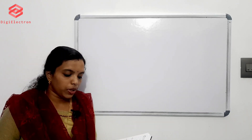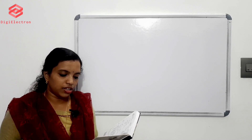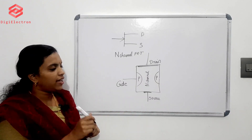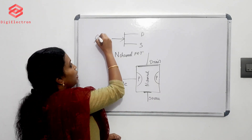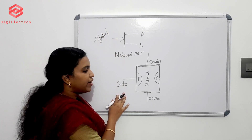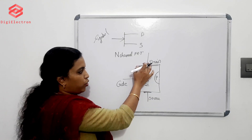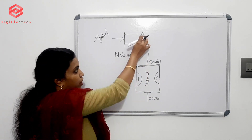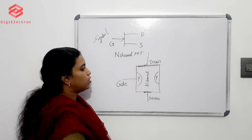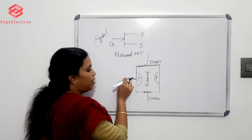The second question is: draw the symbol of N-channel FET. If we use N-channel JFET, the symbol will be as shown. This is the symbol of N-channel JFET. This symbol represents the N-channel FET.